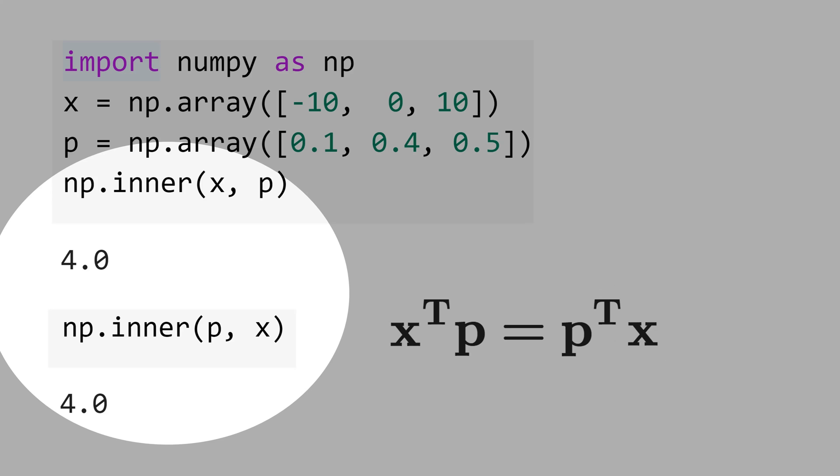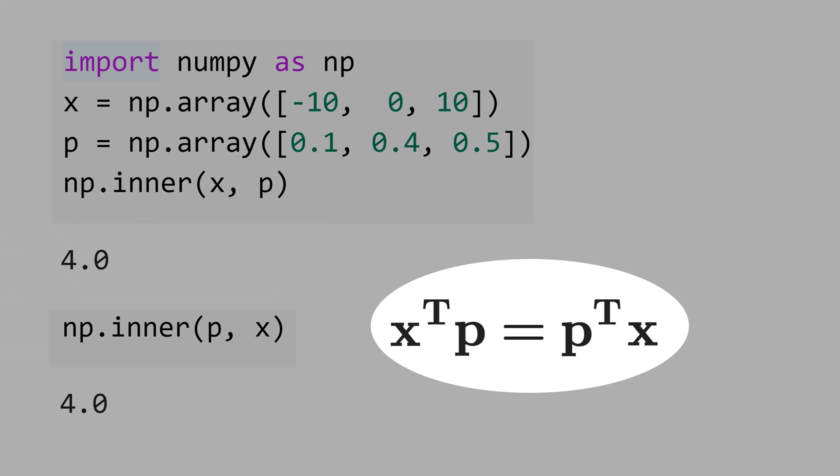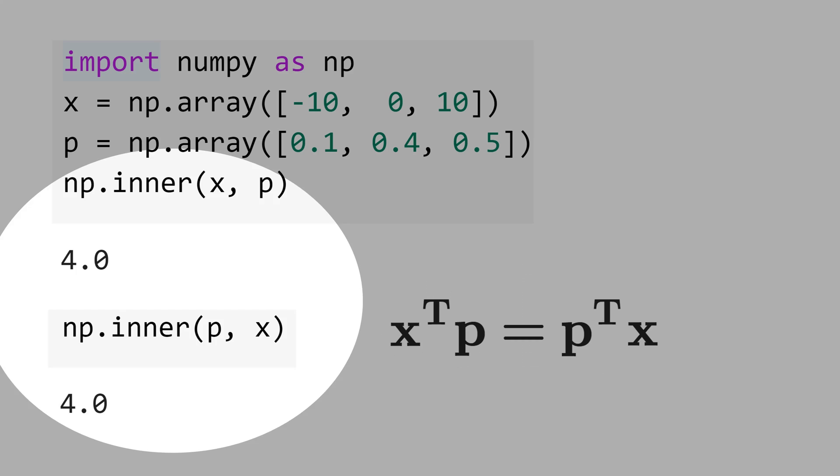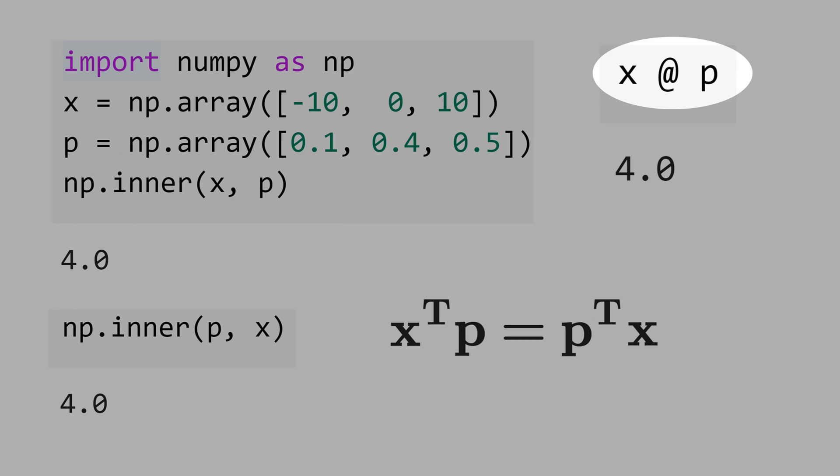Keep in mind, here, you do not indicate the transpose to numpy, and numpy automatically makes this transposition for you, and get the result 4. Other way to do the dot product is just using the at x, at p, you get 4.